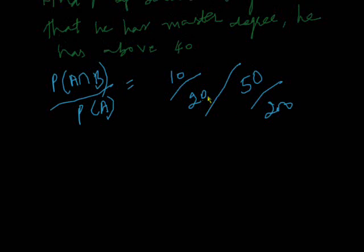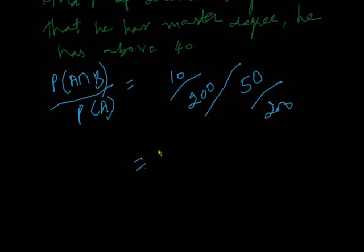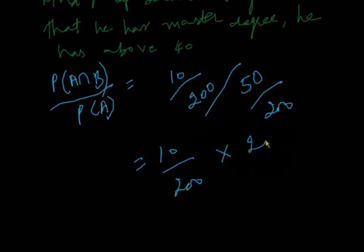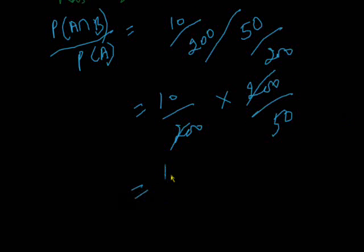Now we will calculate 10 divided by 200, multiply by 200 divided by 50. This cancels out, and this becomes 10 divided by 50. 10 divided by 50 is 1 divided by 5, which equals 0.20 or 20%.